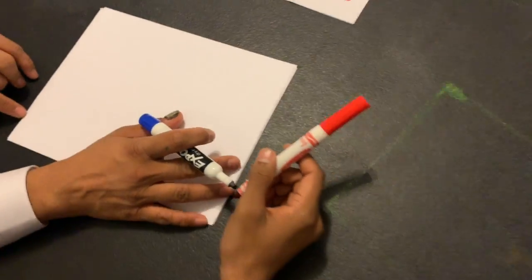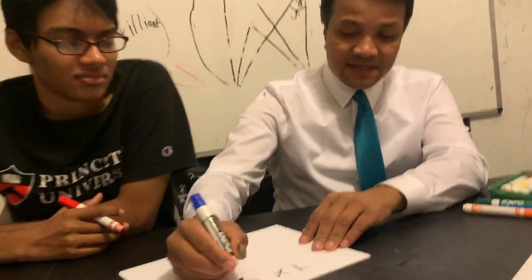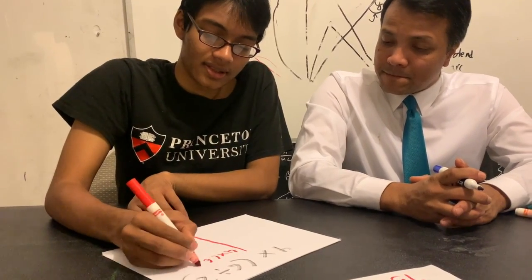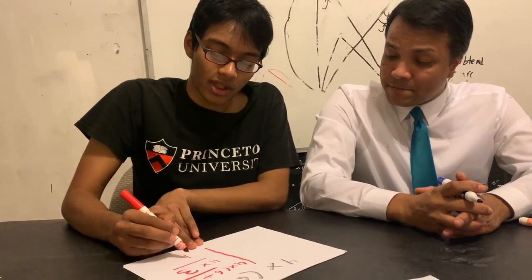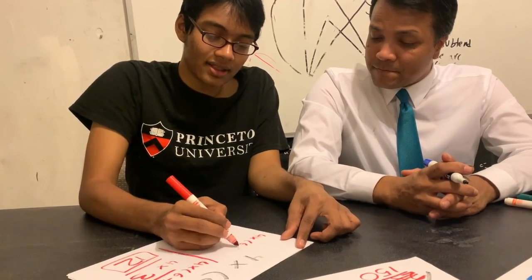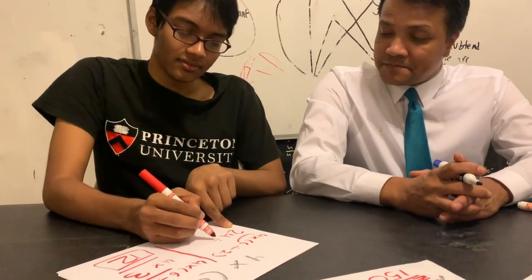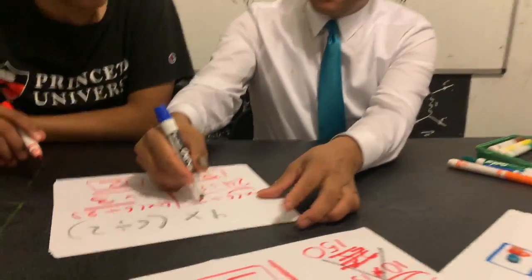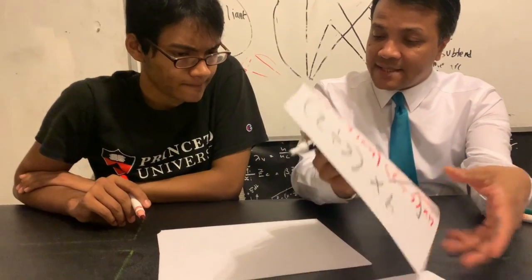Let's verify whether it works for division: four times open-parenthesis six divided by two close-parenthesis. Traditional: six divided by two is three, four times three is 12. Distributive attempt: four times six is 24, divided by four times two — that doesn't work out either. The distributive property doesn't work for division.